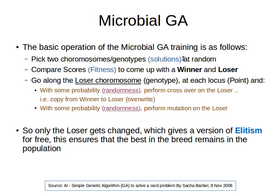Now, we take the loser chromosome and perform crossover and mutation. With some probability — this is where randomness comes in — we perform crossover on the loser. We copy from the winner to the loser, unlike the standard crossover where two chromosomes exchange things. Then, also with some probability, we perform mutation on the loser. Only the loser will be changed.